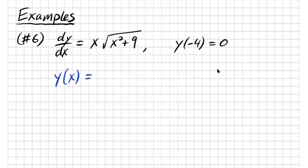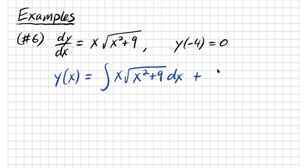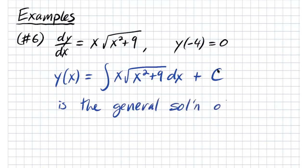In order to get the solution of this differential equation we simply integrate both sides. When we integrate dy/dx we get y of x, and on the right-hand side we get the integral of x times the square root of x plus 9 dx, plus C. This is the general solution of the differential equation.